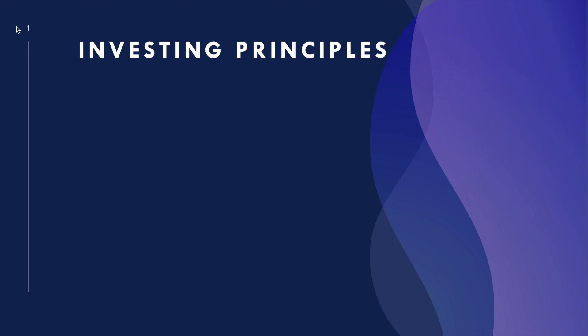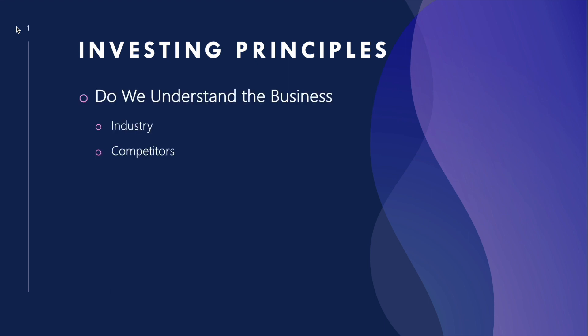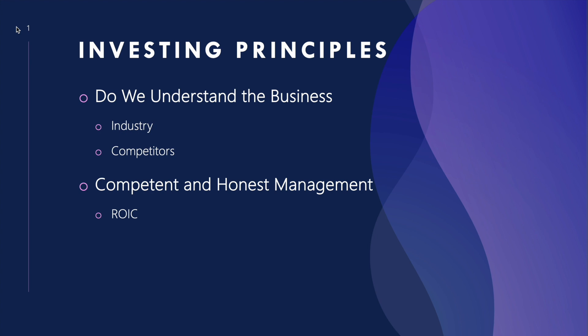To begin, we are going to be looking into our four Buffett and Munger principles. The first is: do we understand the business? How does the business generate revenue, what are they trying to sell, what industry are they in, and who are their competitors? Next, we consider the management team — are the managers able and honest? The biggest indicator of capable management is how effectively they allocate capital. The best way to determine this is to look at return on invested capital, which we will look at later.